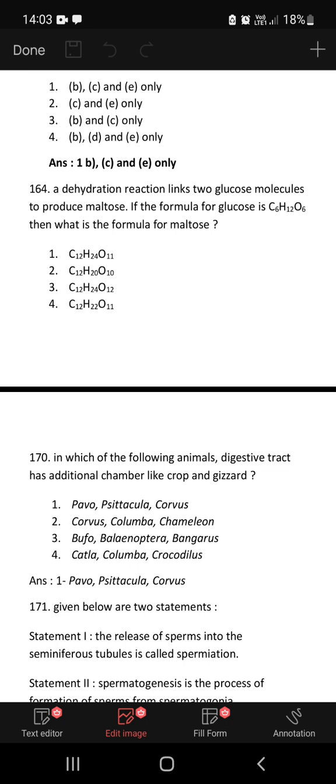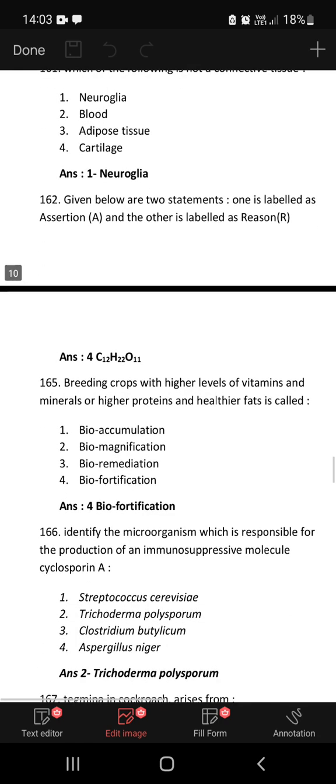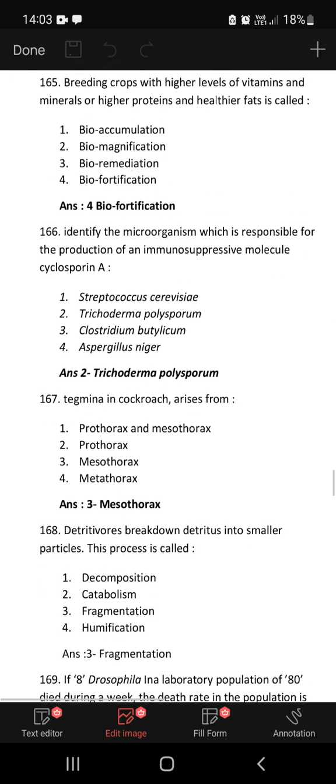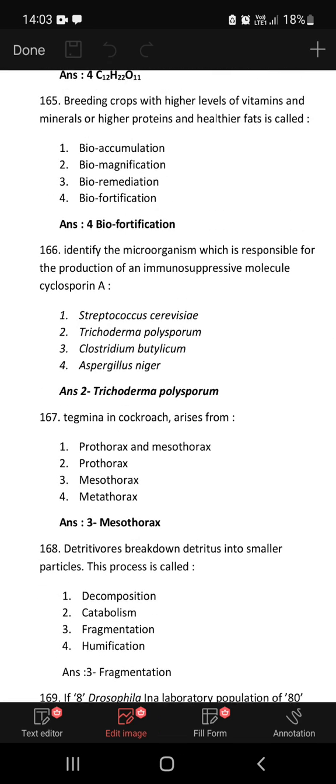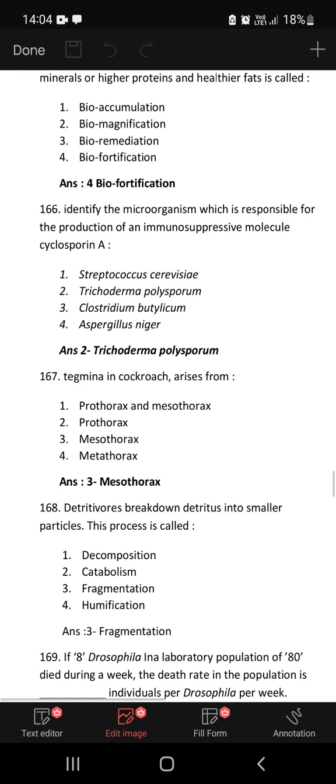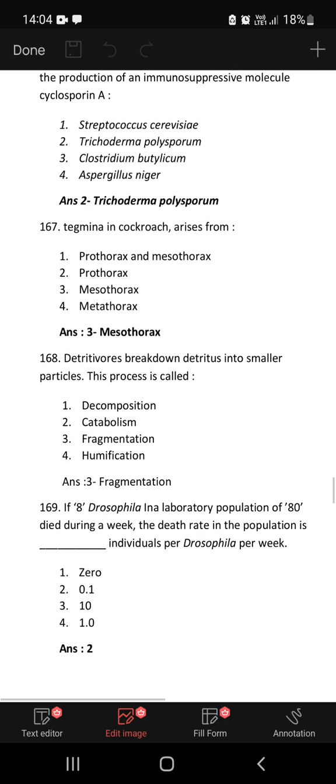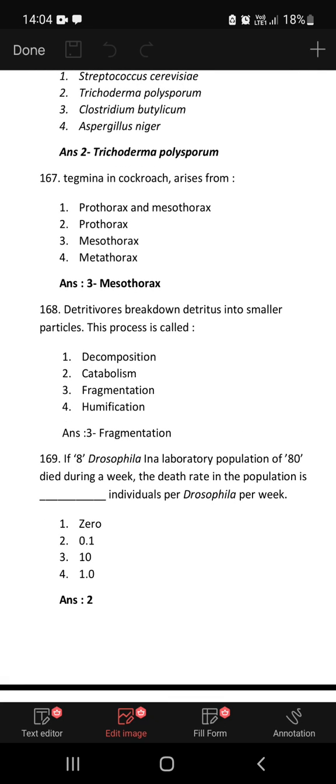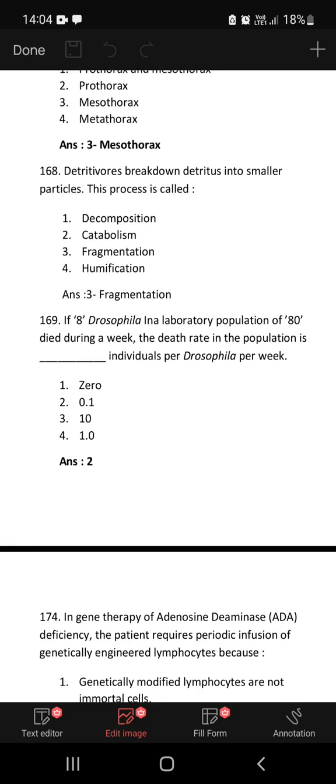164: A dehydration reaction links two glucose molecules to produce maltose. If the formula for glucose is C6H12O6, it would be C12H22O11. Breeding crops with higher levels of vitamins and minerals or higher proteins and healthier fats is called biofortification. Identify the microorganism responsible for production of immunosuppressive molecule cyclosporine A: Trichoderma polysporum is the answer.